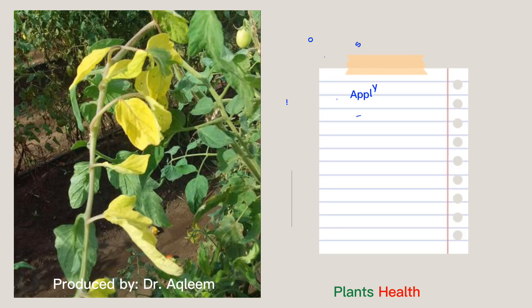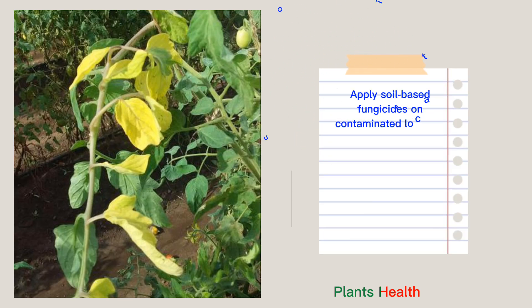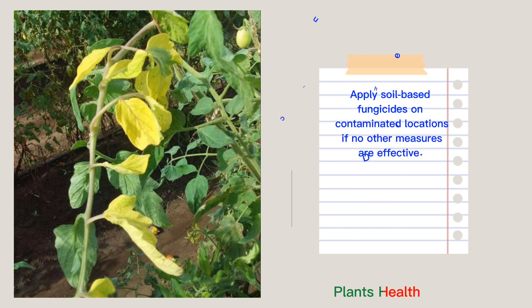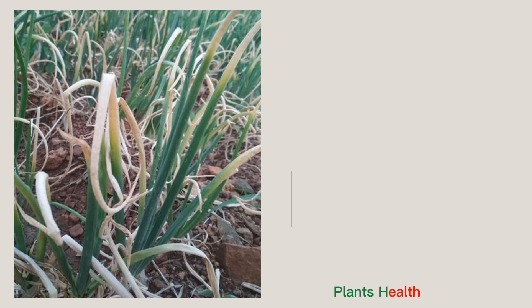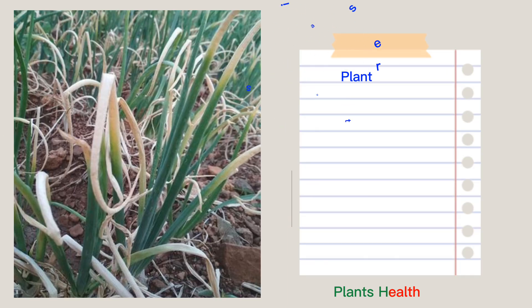Apply soil-based fungicides on contaminated locations if no other measures are effective. Drenching the soil with copper oxychloride solution before sowing or transplanting is also effective. Plant resistant varieties if available in your area.